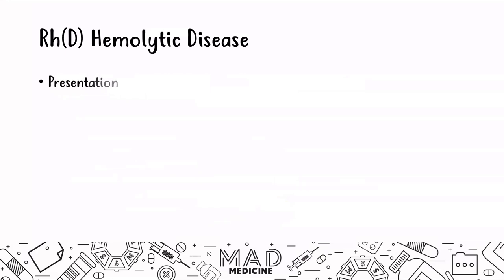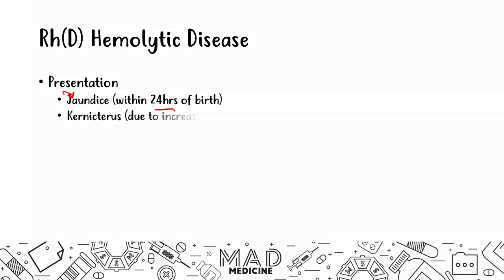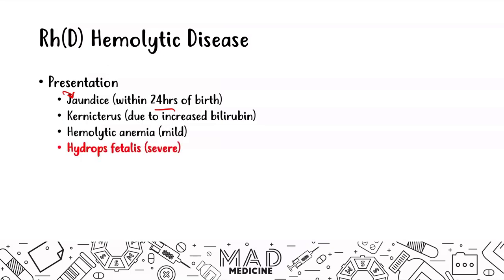The presentation in this case is a baby who presents with jaundice within 24 hours of birth — very important. Kernicterus may also be present due to the increased bilirubin from hemolysis. You will also see mild hemolytic anemia. In very severe cases, the baby will present with hydrops fetalis, which is essentially a fetal abortion.